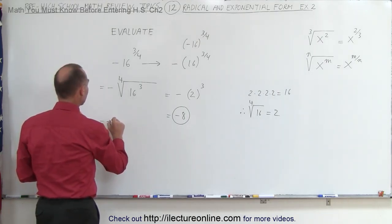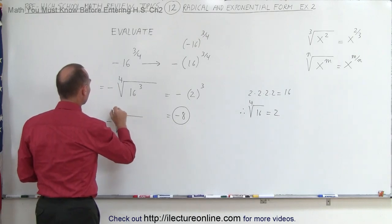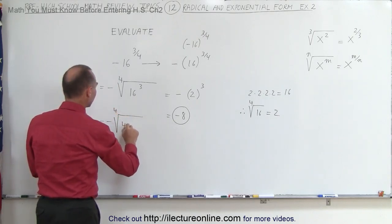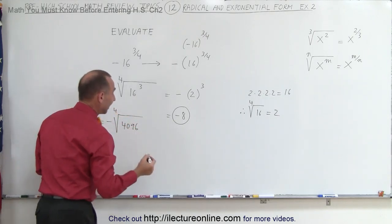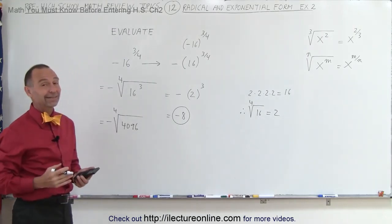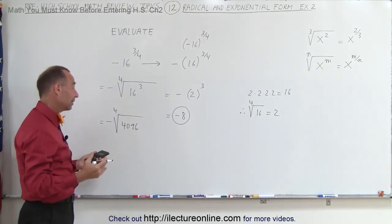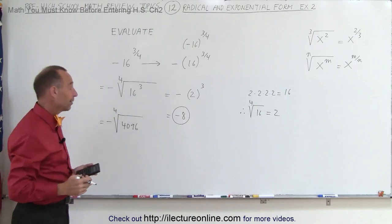So we could say, well, this is equal to the negative of the fourth root of 4096. Now the question is, what is the fourth root of 4096? And unless you have a calculator, you wouldn't be able to figure that out on your own.